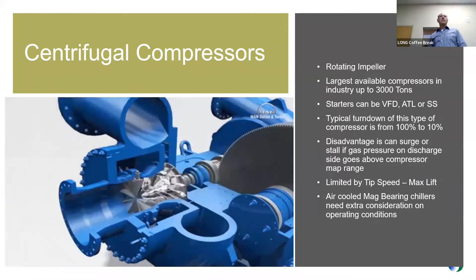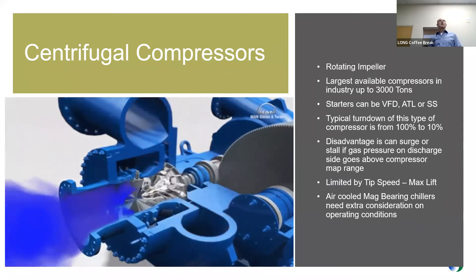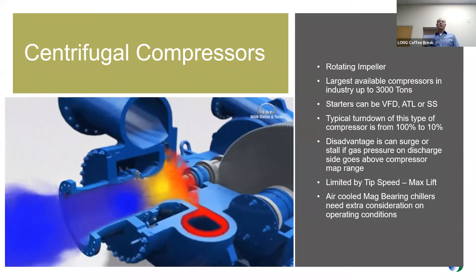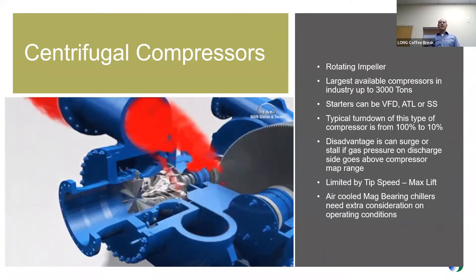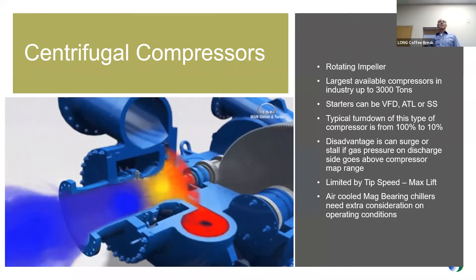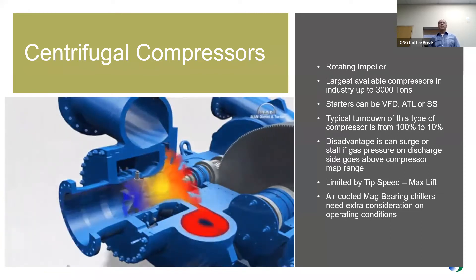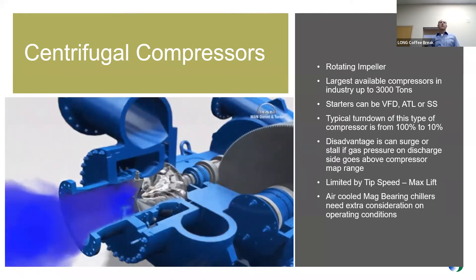The disadvantage of a centrifugal type of chiller is that it can surge. The condenser side, where it's trying to push that high-pressure, high-temperature gas, can sometimes overload that particular pressure. When that happens, it causes the compressor or impeller to stall, and you don't get any refrigeration or heat transfer. That's one of the disadvantages.